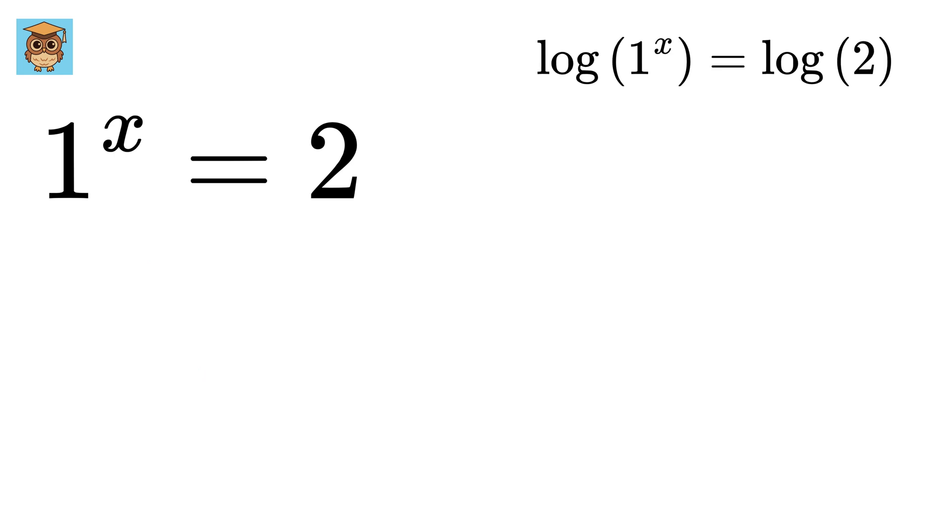First of all, take natural log on both sides. I will be using log to denote natural log. Some people also use ln to denote the same. You can use whatever you want to. So using this property of logarithm, the x will jump right here. And we get x times log of 1 equals log of 2.